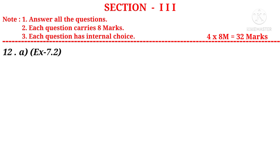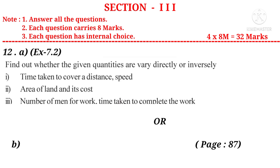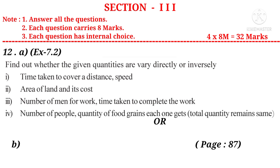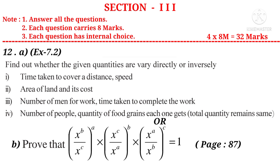Question 12A: Find out whether the given equations vary directly or inversely. 1) Time taken to cover a distance and speed. 2) Area of land and its cost. 3) Number of men for work and time taken to complete the work. 4) Number of people and quantity of food grains each one gets, when total quantity remains same. It is from Ratio and Proportion. Or 12B: Prove that (X^b / X^c)^a × (X^c / X^a)^b × (X^a / X^b)^c = 1, from Exponents and Powers.